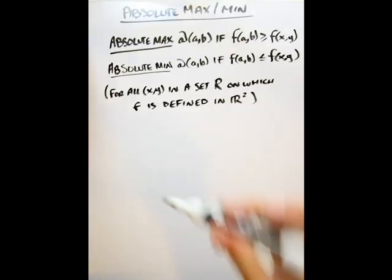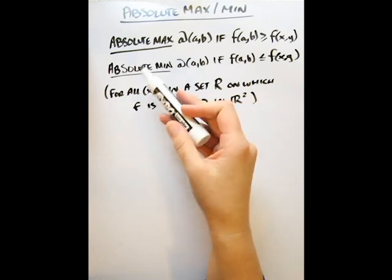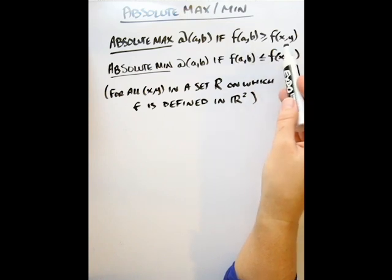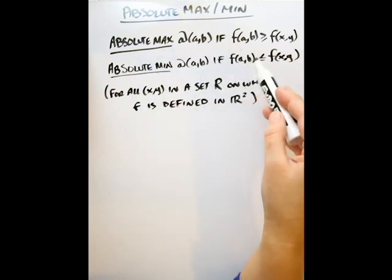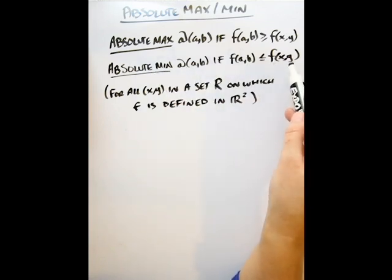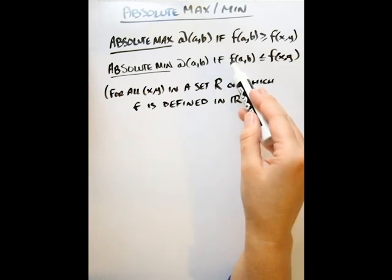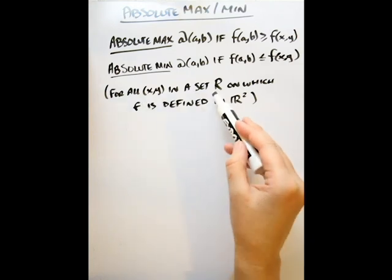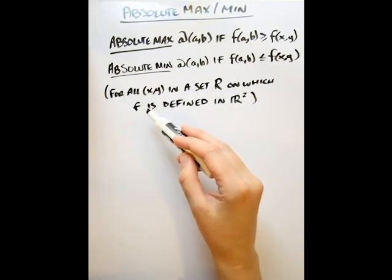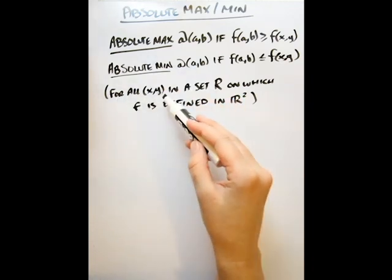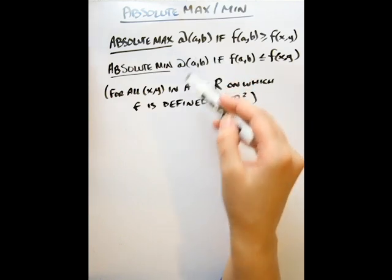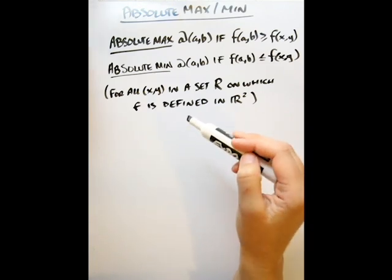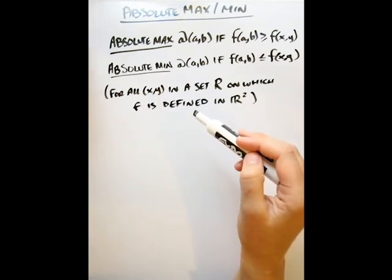The last topic is absolute max and minimum values. A function has an absolute maximum if the function value at that point is greater than or equal to all other function values; opposite for absolute min. This is the same as local max and min, but the key difference is that this applies for all x and y in the entire set R on which our function is defined — not just near the point. So we also have to consider boundary values of our region.